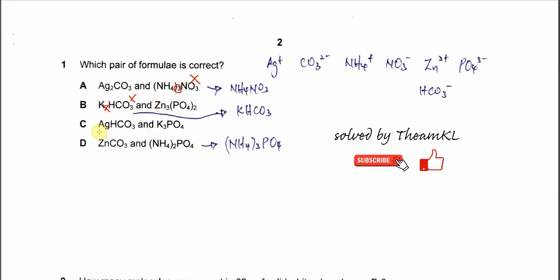For C, this is silver hydrogen carbonate—both charges make this a correct formula. And because phosphate is three negative, it needs three potassium ions, so it's K3PO4. This is correct. Therefore, the correct pair is C.